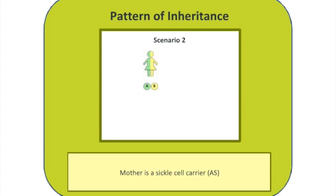In the second scenario, we're now considering both parents having sickle cell trait, so both having the genotype AS. The mother is a carrier of sickle cells with genotype AS, and the same this time goes for the father.